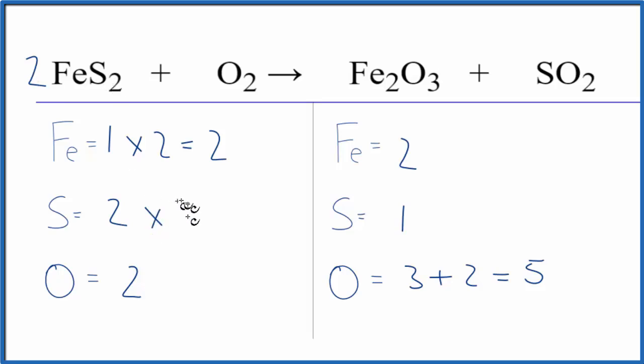2 times 2 for the sulfur. Now we have four sulfurs. Let's fix the sulfurs. We can put a 4 in front of the sulfur dioxide. 1 times 4, that equals 4.